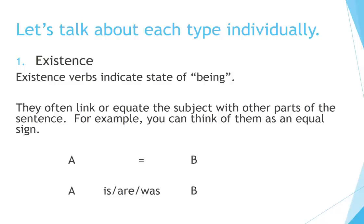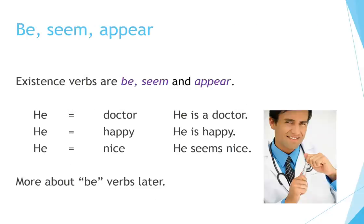Number 1: Existence. Existence verbs indicate state of being. They often link or equate the subject with other parts of the sentence — you can think of them as an equal sign: A equals B. Existence verbs are be, seem, and appear. For example: 'He is a doctor.' 'He is happy.' 'He seems nice.'